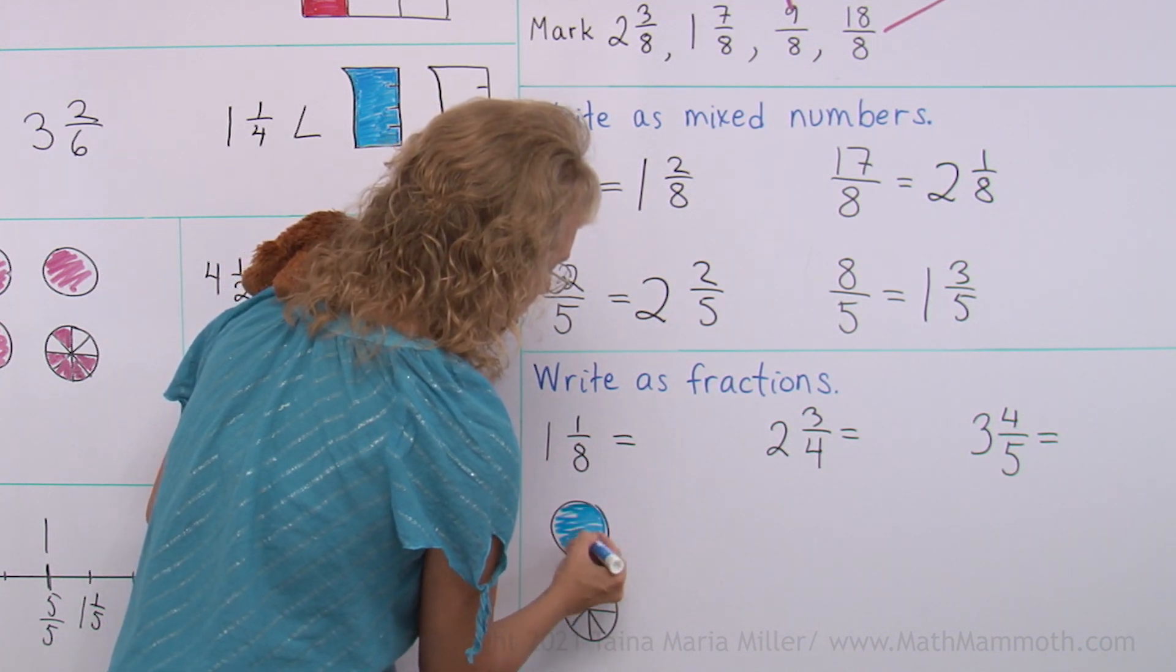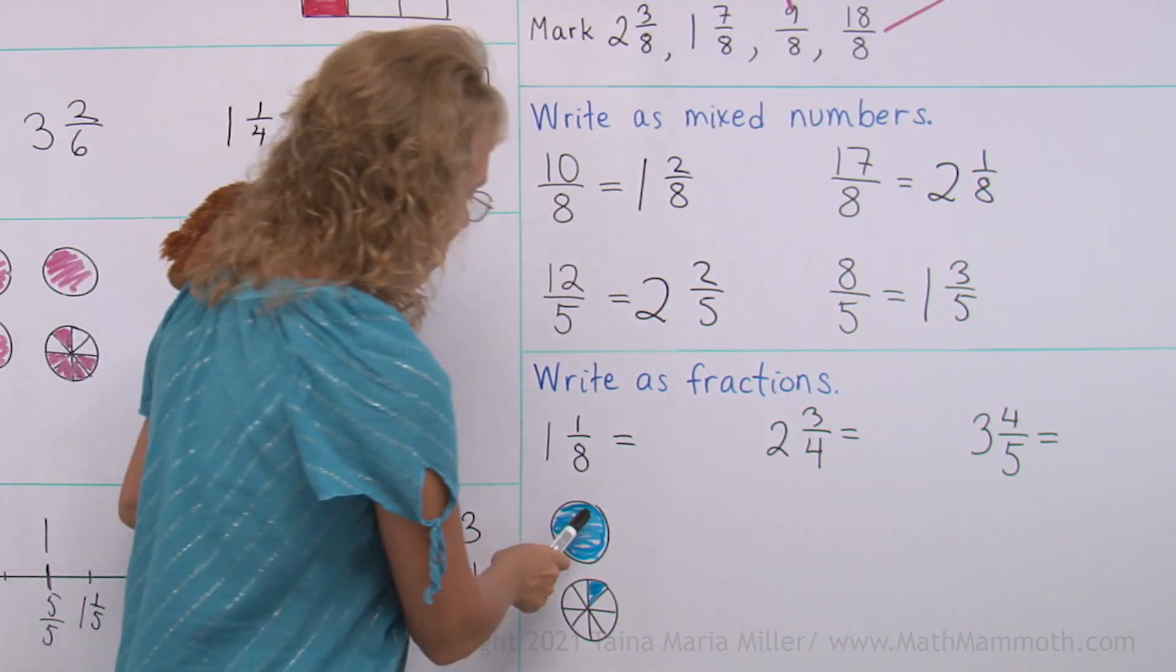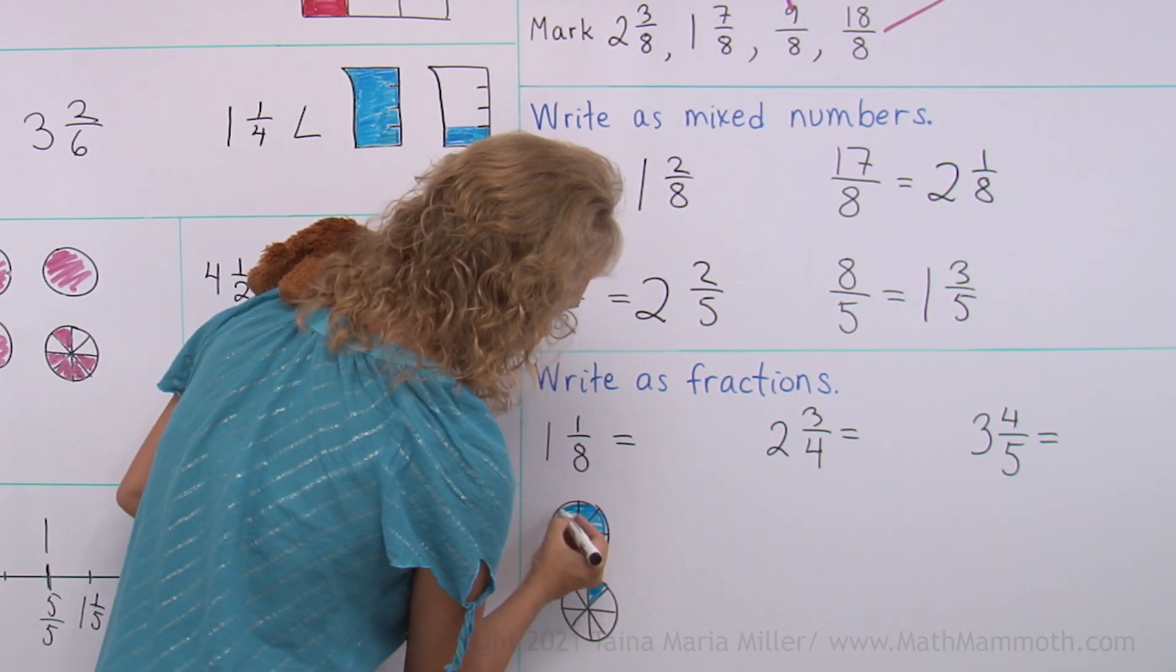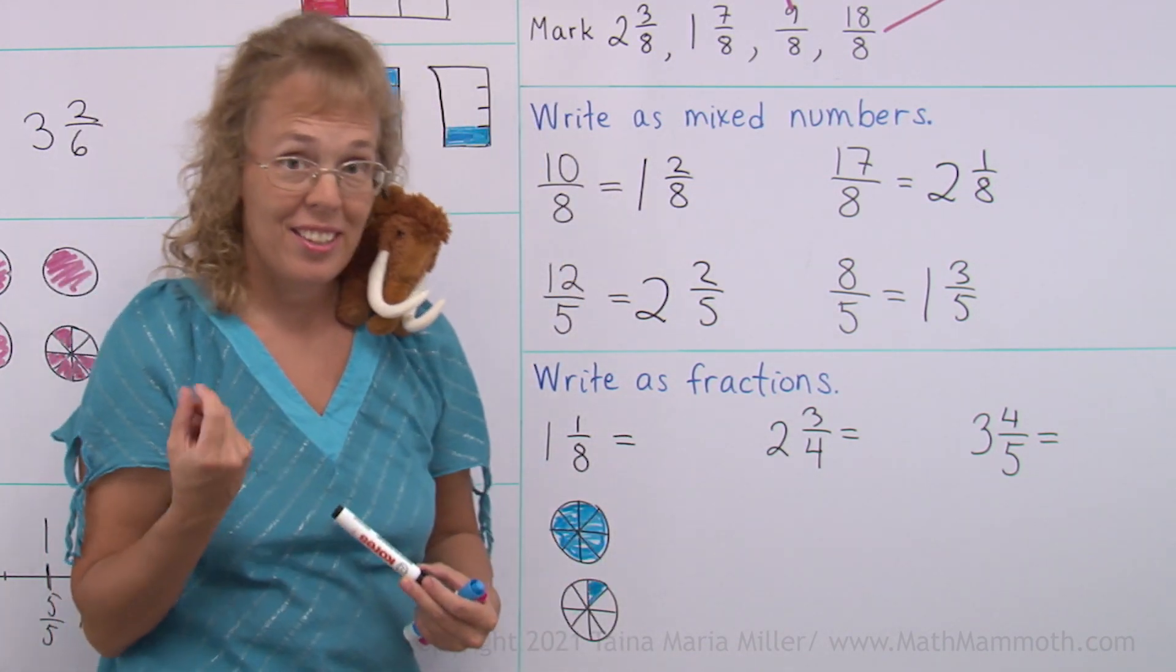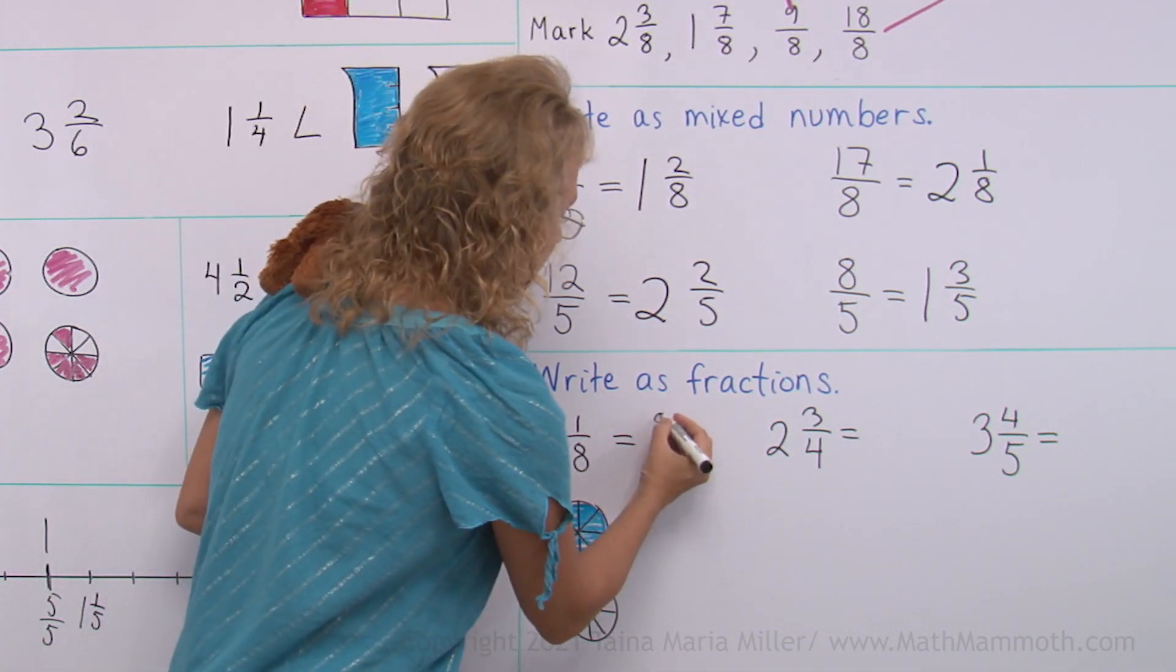So how do I get this into a fraction? What I will do is take this 1 whole pi and divide it into eighths. So now you can see how many eighths there are in total. 8 eighths and 1 more eighth, 9 eighths.